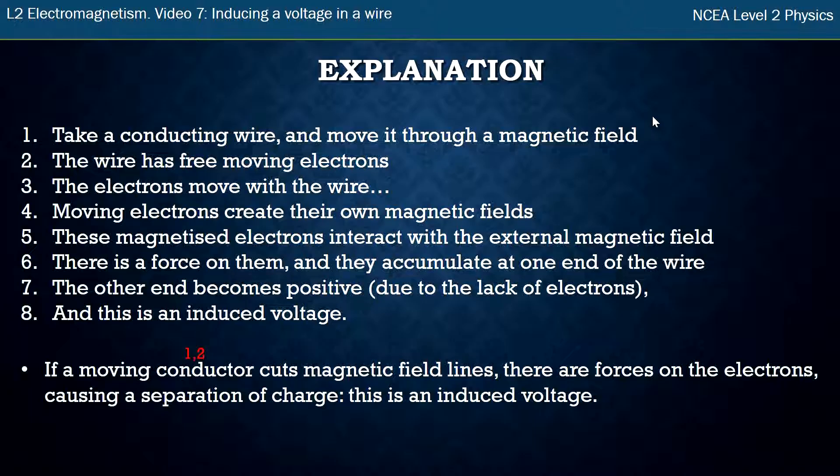So let's talk about how this short explanation is the same as the big explanation. A moving conductor—that takes into consideration point one and point two. It's a conducting wire. A conducting wire has free electrons. So I've said one and two by just saying a moving conductor.